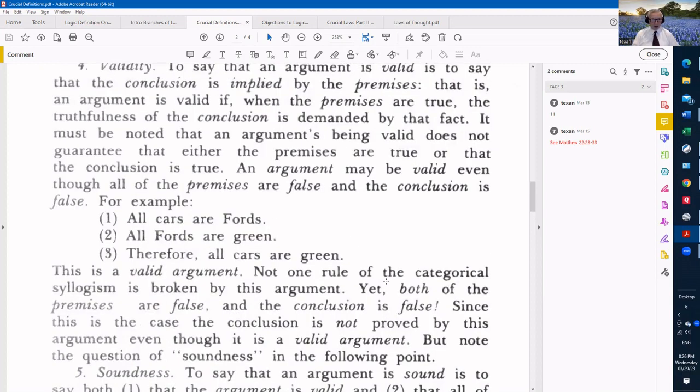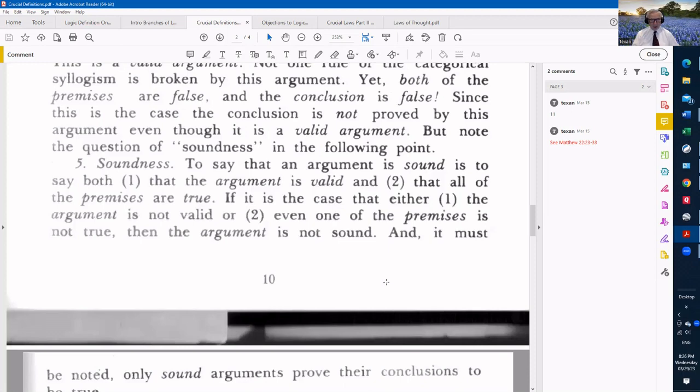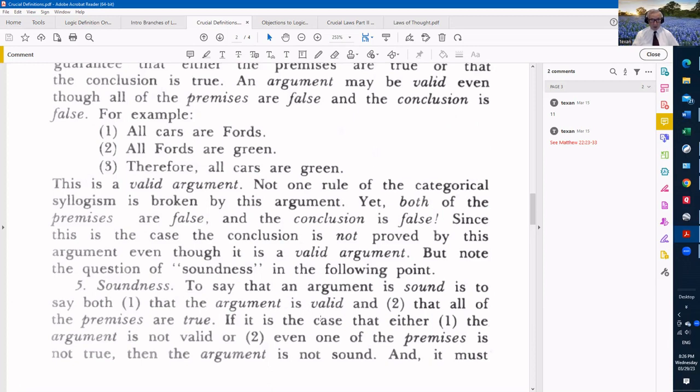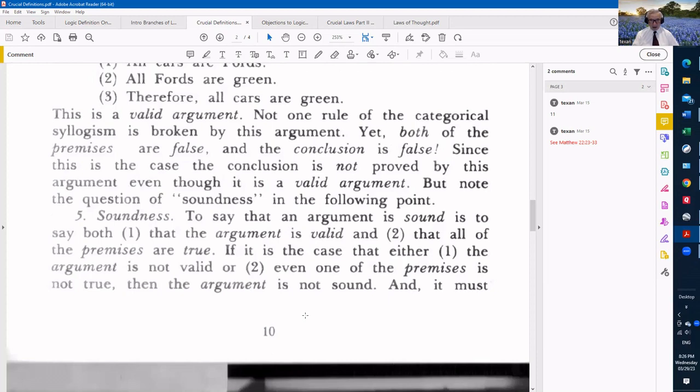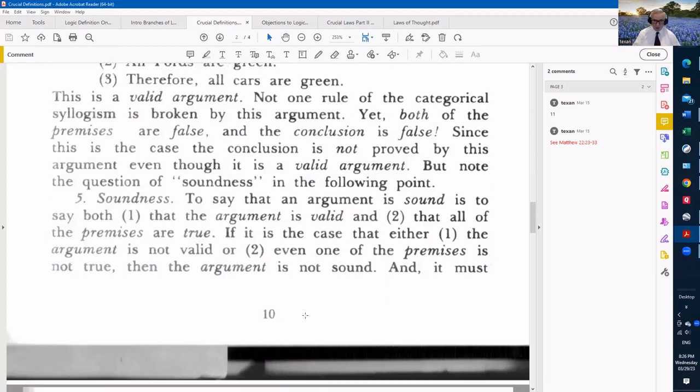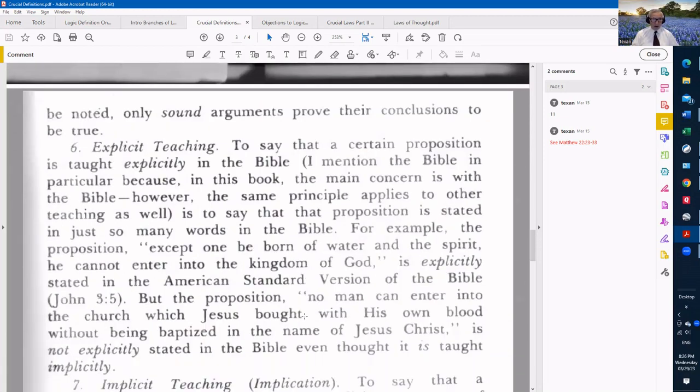And in these argumentations, soundness, we want to say that an argument is sound. We want to say that means that the argument is valid, it has the right form. All cars are Ford, all Fords are green, therefore all cars are green. That's a valid argument. But beyond that, we want to be sure that all the premises are true, in which case the one we just gave, the premises are not true. And if it's the case that the argument is not valid or even one of the premises is not true, then the argument is not a sound argument. And it must be noted that only sound arguments prove their conclusion to be true.